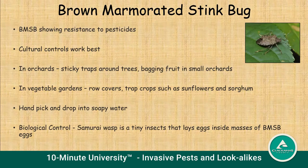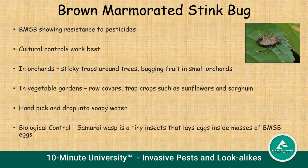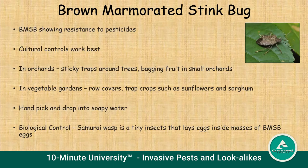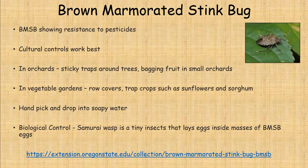If you see stink bugs out and about or in your home, just handpick them carefully, try not to squeeze them because they do stink, and drop them into soapy water. We're very lucky there is a biological control: a little samurai wasp that lays its eggs inside the egg masses of the brown marmorated stink bug. Oregon State University is rearing large numbers of these samurai wasps and releasing them into agricultural areas to help take care of this pest.